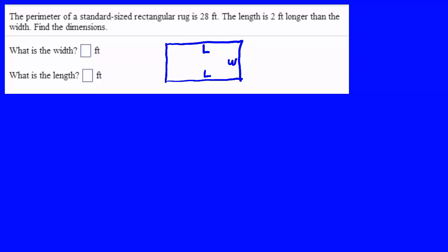That means find the length and the width. So I draw a rectangle, I label the length and the width, and I write the basic formula for perimeter, which is 2L plus 2W.